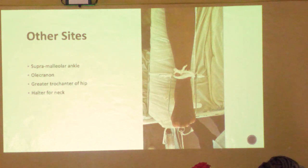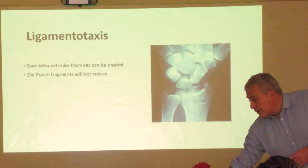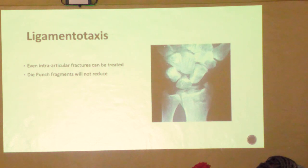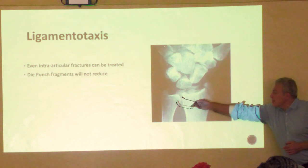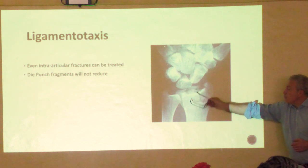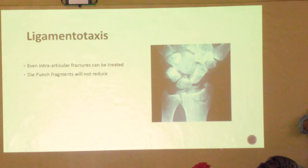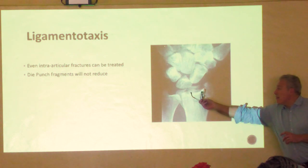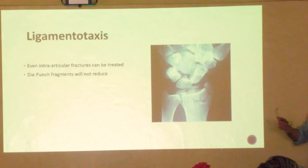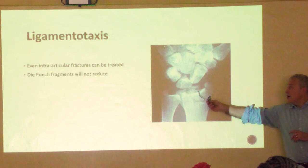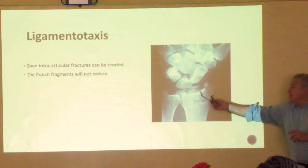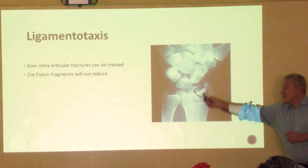There is also halter traction for patients with neck injuries. As a final thought, you can even reduce intra-articular fractures with traction - as with distal radial fractures - because of the concept of ligamentotaxis. The capsule attaches to every single bit of bone around the fracture, so if you pull on the carpus it will pull all the fragments back into the right place. The exception is a die-punch fracture with a centrally depressed fragment that has no soft tissue attachments - no matter how hard you pull, that fragment won't come out to length. That's called negative ligamentotaxis.